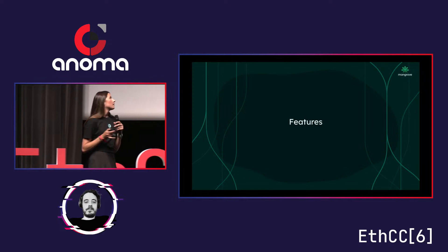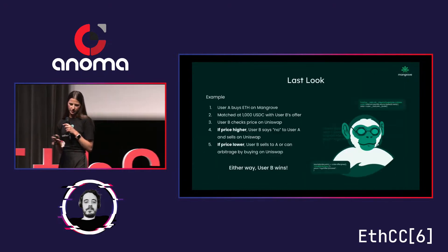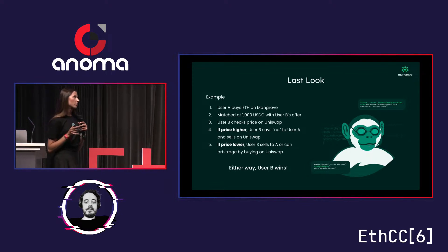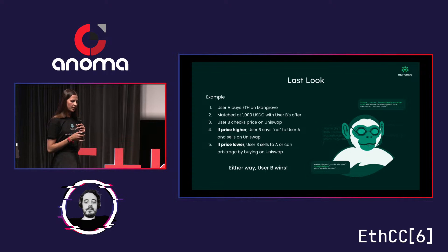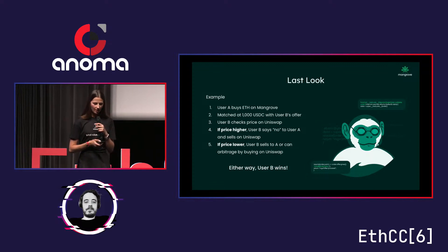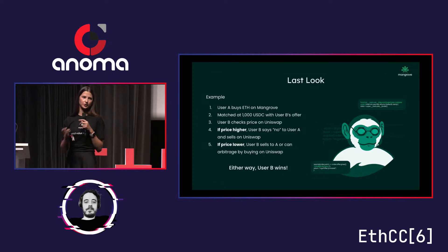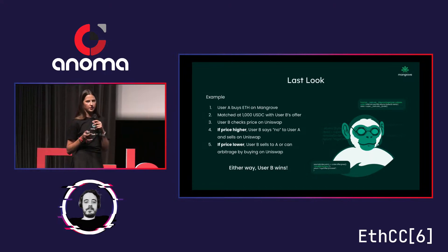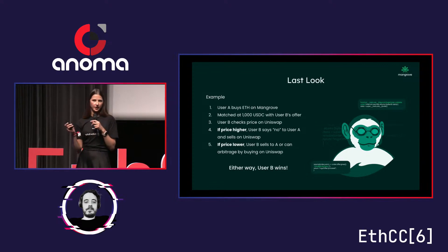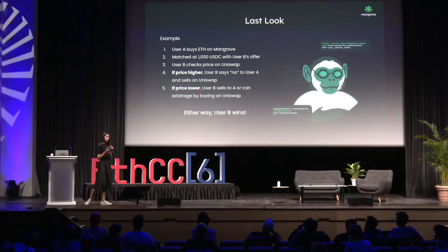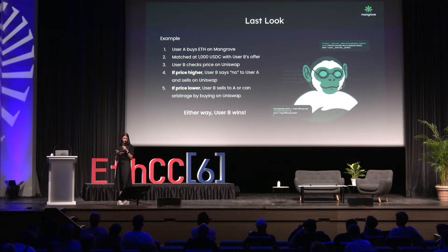Now I'd like to talk about specific features you can embed into your smart offers. The last look mechanism gives the Maker an option to withdraw from executing the trade. Here's a quick example: let's say user A wants to buy some ETH and is matched with 1,000 USDC of user B. User B can check the price on another exchange — let's say Uniswap. If the price is higher there, user B says no to user A and sells on Uniswap. If it's lower there, user B can choose to sell to user A on Mangrove, or perform an arbitrage by buying from Uniswap. In both cases, user B wins.